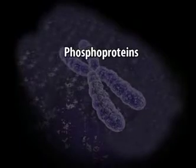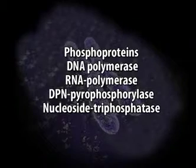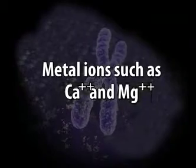The non-histone protein fraction of chromatin consists of a large number of very heterogeneous proteins. The non-histone proteins are mostly acidic and have been considered more important than histones as regulatory molecules. Some non-histone proteins also have enzymatic activities; the most notable enzymatic proteins of chromosomes are phosphoproteins, DNA polymerase, RNA polymerase, DPN pyrophosphorylase and nucleoside triphosphatase. Metal ions such as calcium and magnesium are supposed to maintain the organization of chromosomes intact. In spermatozoa of fishes, protamines are found — low molecular weight basic proteins rich in the amino acid arginine.